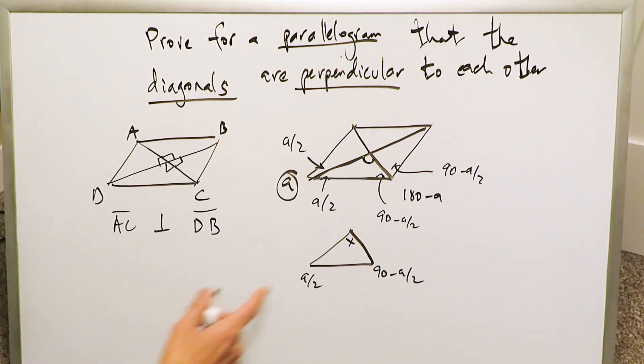We'll have A over 2 plus 90 minus A over 2 plus X should equal 180. This minus A over 2 and positive A over 2 will cancel out. And then you'll have 90 plus X is equal to 180, and then you know X here is equal to 90.